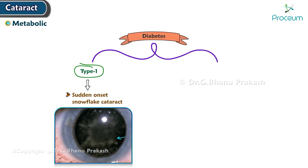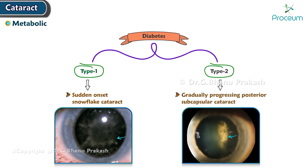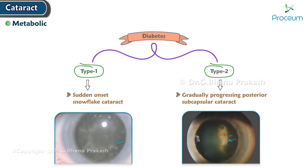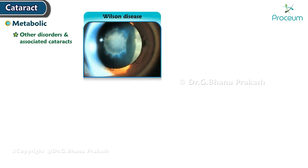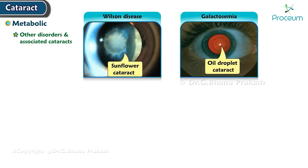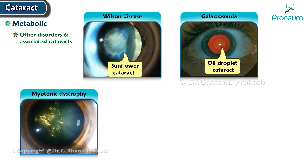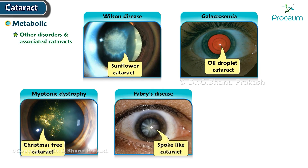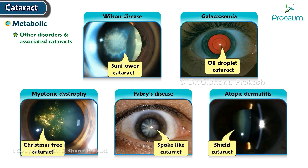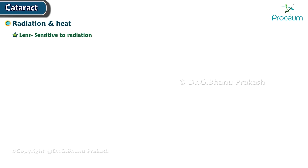Metabolic cataract is usually associated with diabetes. Type 1 diabetes shows sudden onset snowflake cataract, and type 2 shows a gradually progressing posterior subcapsular cataract. Other metabolic disorders and associated cataracts: Wilson's disease shows sunflower cataract, galactosemia shows oil droplet cataract, myotonic dystrophy shows Christmas tree cataract, Fabry's disease shows spoke-like cataract, and atopic dermatitis shows shield cataract.